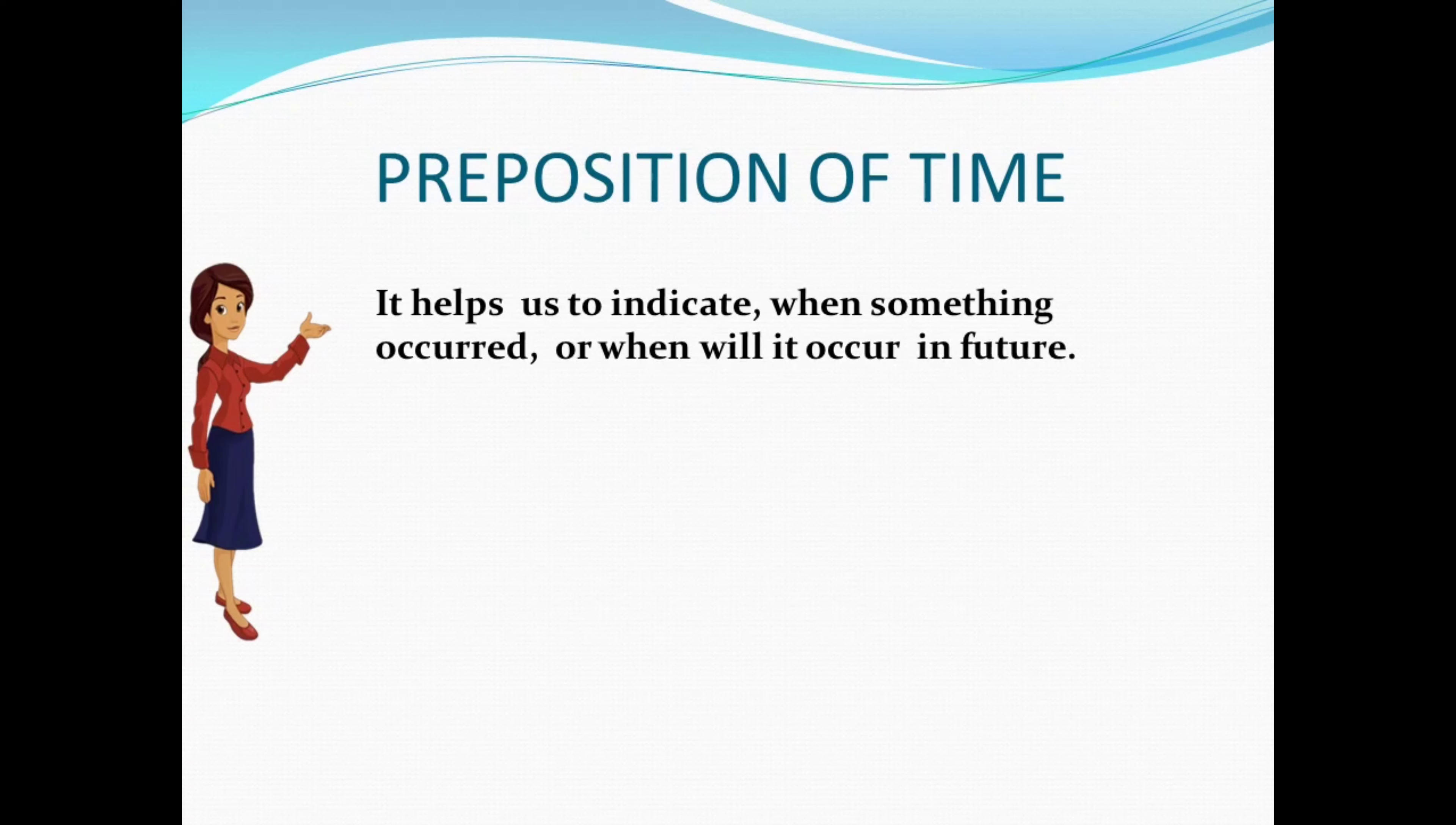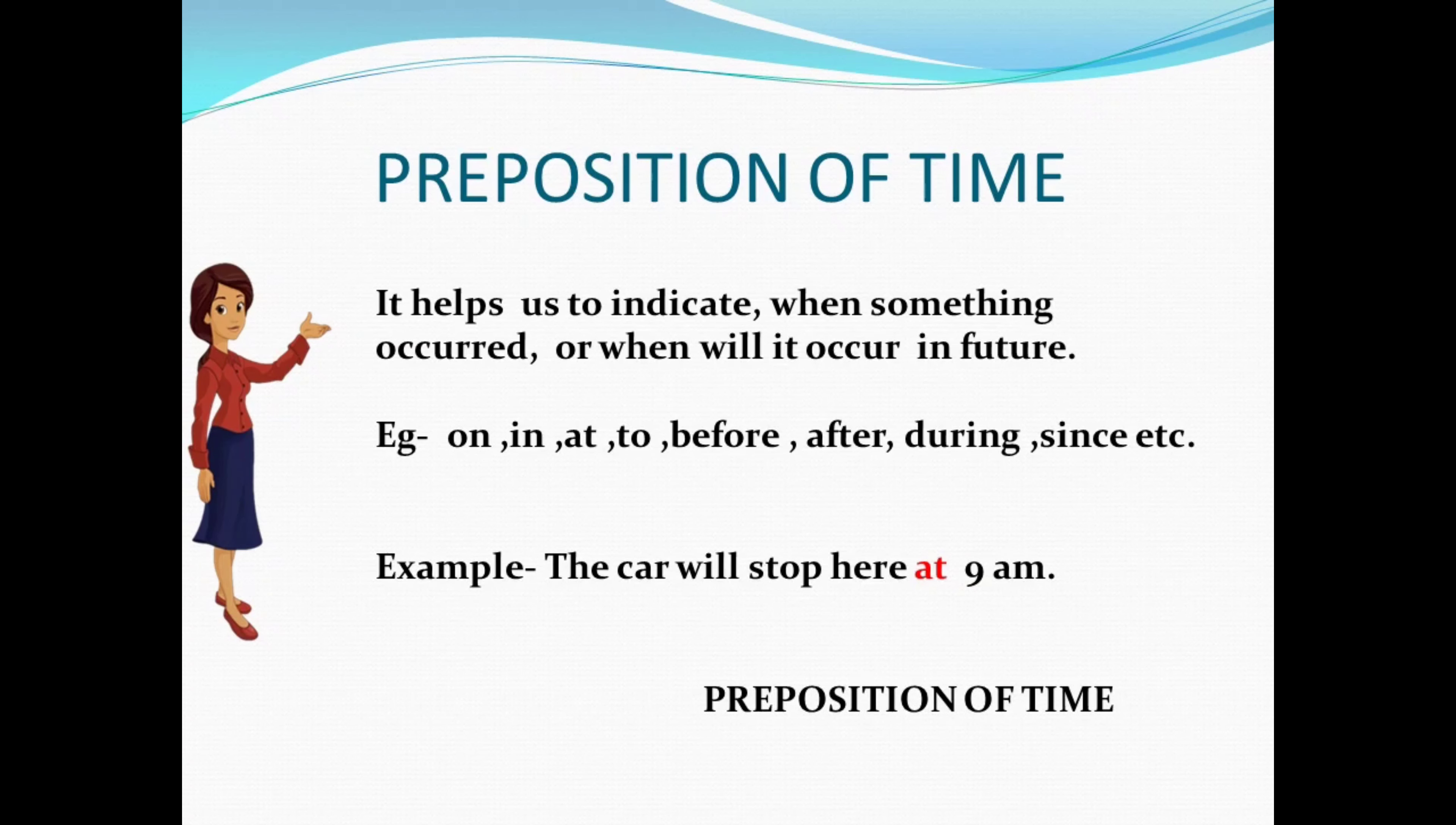Now let's look at the first type of preposition, that is preposition of time. It helps us to indicate when something occurred or when will it occur in future. Few examples used for preposition of time are on, in, at, to, before, after, during, and since. In this way you can frame a sentence: 'The car will stop here at 9 a.m.' So here the word 'at' which acts as a preposition tells us exactly when the car will stop.